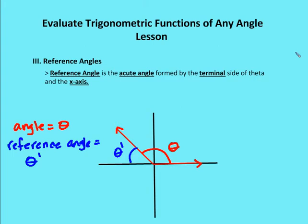The unique thing about a reference angle is that its absolute value is always the same as the angle in question. For example, if the angle theta is 150 degrees and I take the sine of 150 degrees, I get a value of 0.5. The reference angle is 30 degrees, and the sine of 30 degrees is also 0.5. So the absolute value of any angle and its reference angle are always going to be the same. It's important to know these reference angles as you talk about and measure angles larger than 90 degrees, especially in relationship to the unit circle.